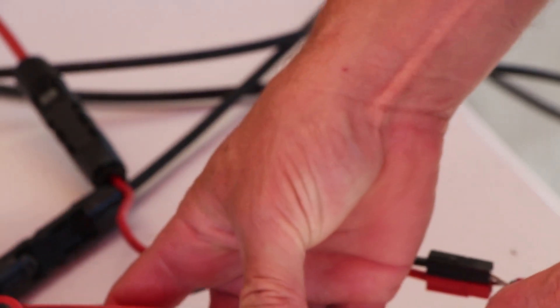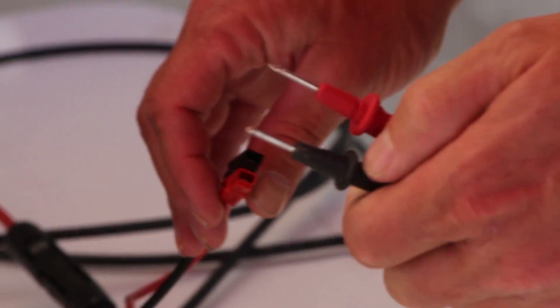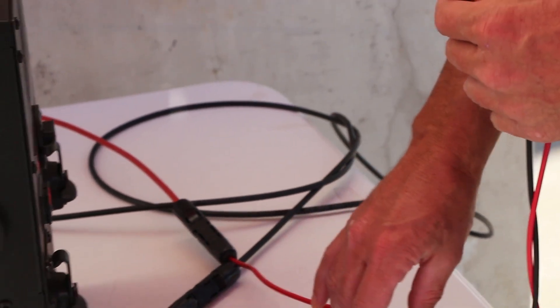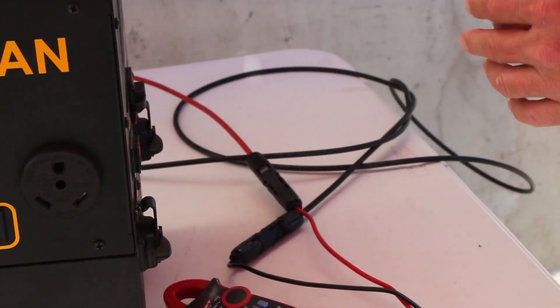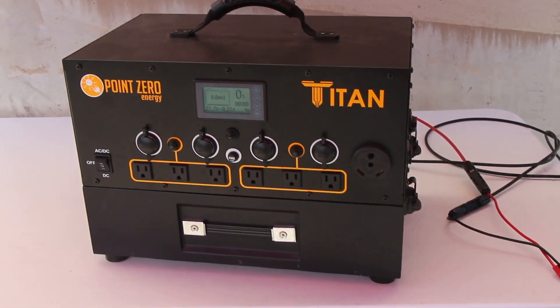Okay, now the Titan solar generator is different than most, it uses a little bit higher voltage and so we need to have 35 to 145 volts. So our voltage is too low there, and so you need to figure out exactly why that's so low.